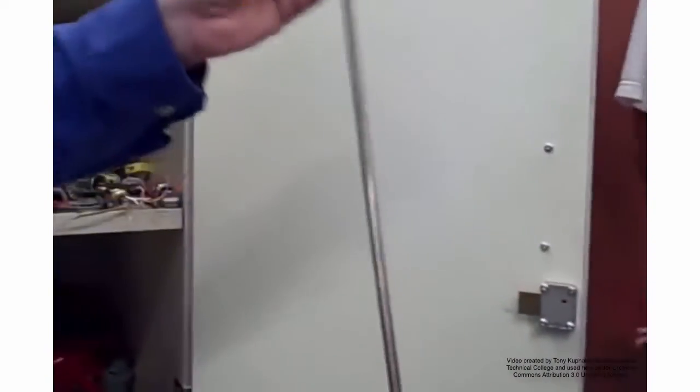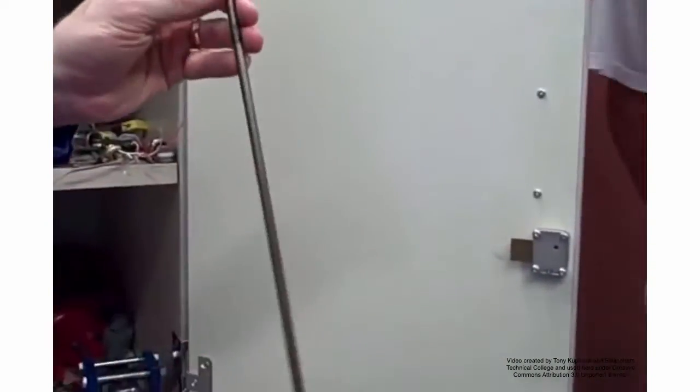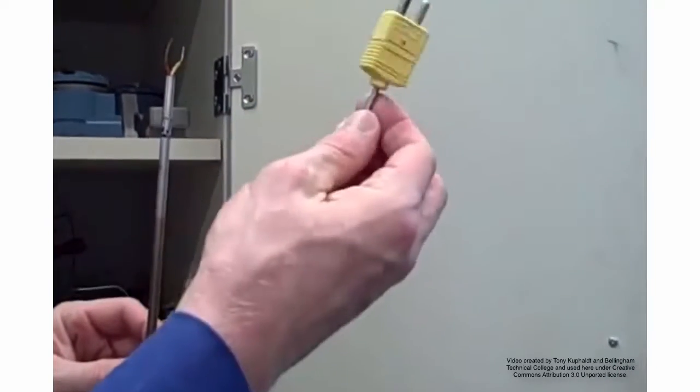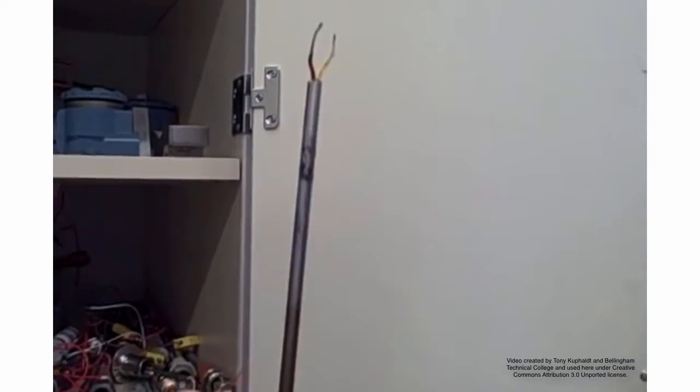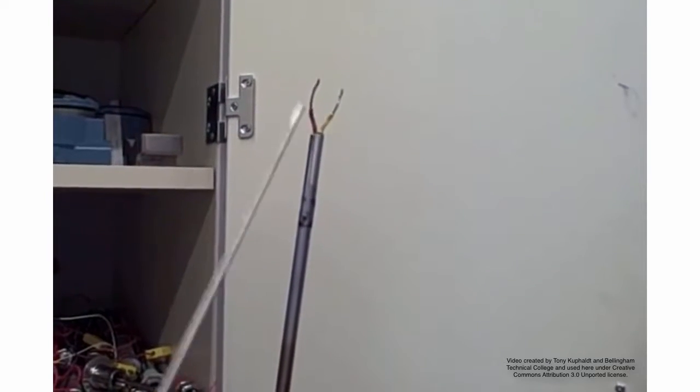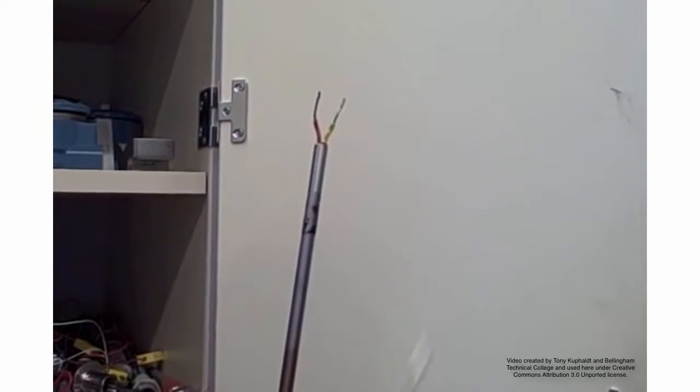We also have another version of an industrial thermocouple. This one right here does not have a molded plug. It just has two wires coming up. We can tell from that it is also a type K, yellow and red, red being negative, yellow being positive.